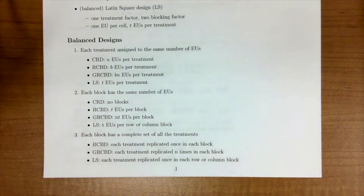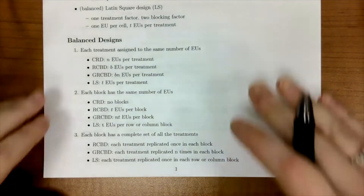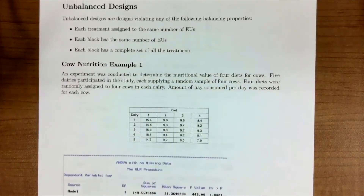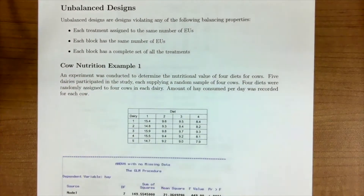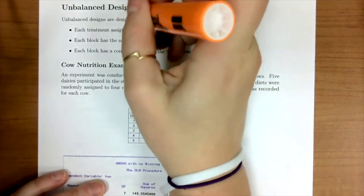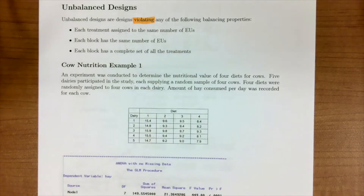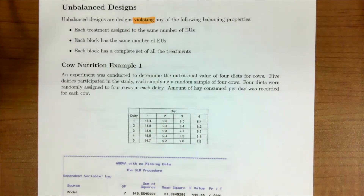However, what happens if we violate these balanced conditions? An unbalanced design violates any of the following balancing properties: each treatment isn't assigned to the same number of EUs, each block doesn't have the same number of EUs, or each block doesn't have a complete set of all treatments — then we're in an unbalanced case.